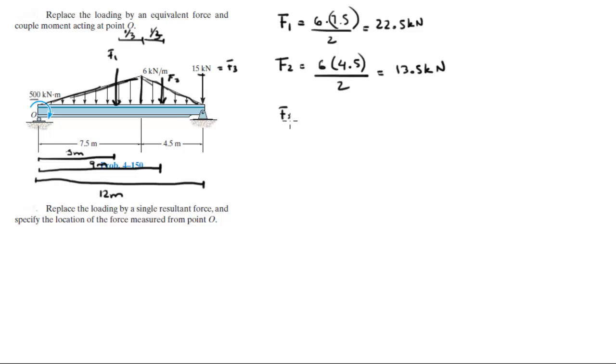F3 is given, but let me just write it. FR is the sum of these three because they're all aiming the same way. FR comes out to be 51 kN.